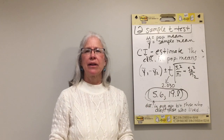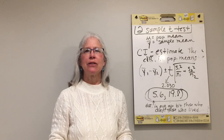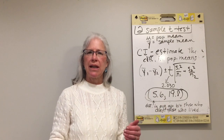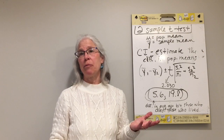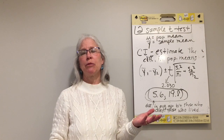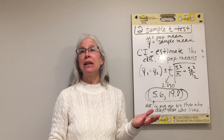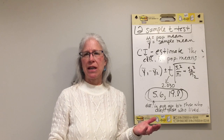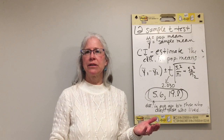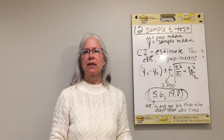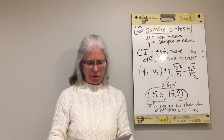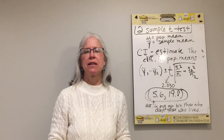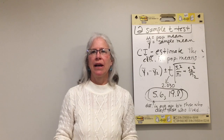So: confidence intervals help us estimate the difference in population means — how big is the difference? Hypothesis testing asks: is there a difference? We hypothesize there's not, collect sample data, and see how often we'd see a difference in sample means like that if there was actually no difference. If we'd rarely see such a big difference by chance, we reject that there's no difference and believe there is one. That's the two-sample t-test: two groups compared on a mean.